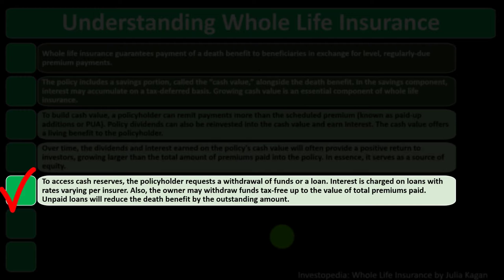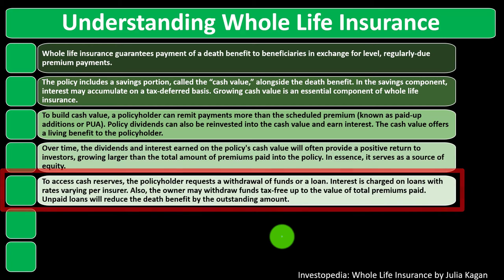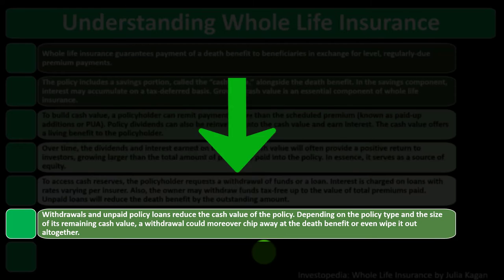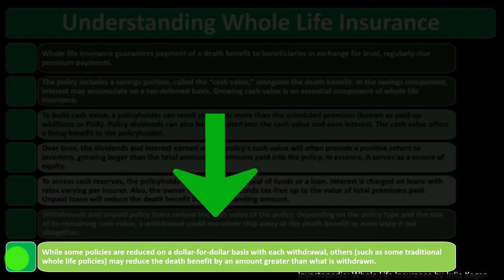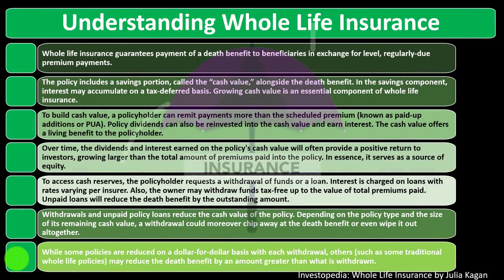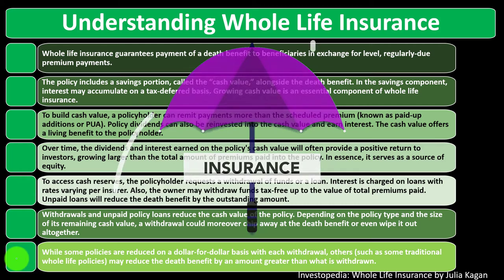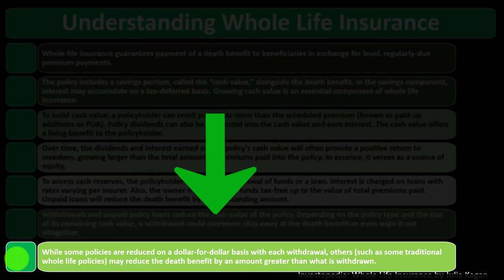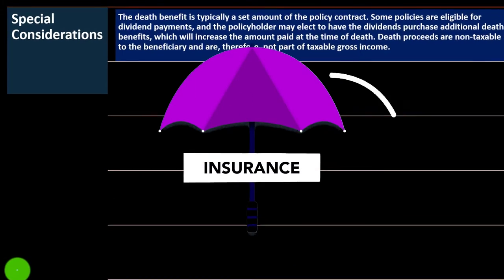Interest is charged on loans, with rates varying per insurer. The owner may withdraw funds tax-free up to the value of total premiums paid. Unpaid loans will reduce the death benefit by the outstanding amount, and withdrawals and unpaid policy loans also reduce the cash value. Depending on the policy type and remaining cash value, a withdrawal could chip away at the death benefit or wipe it out altogether. Some traditional whole life policies may reduce the death benefit by an amount greater than what is withdrawn — meaning pulling money from the cash value can impact the death benefit paid to recipients at death.